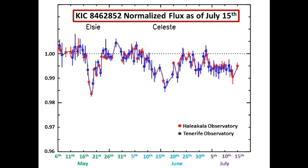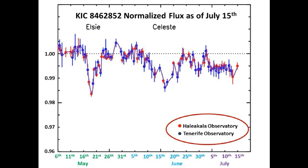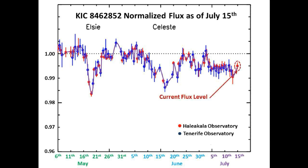So this is the normalized flux graph provided by Dr. Tabitha Boyajian. The red data points are from an observatory in Hawaii and the blue data points are from an observatory in Spain. This data is taken in the R band. The current flux level is circled in red and it shows that we are still down approximately 0.5 percent from nominal flux levels.